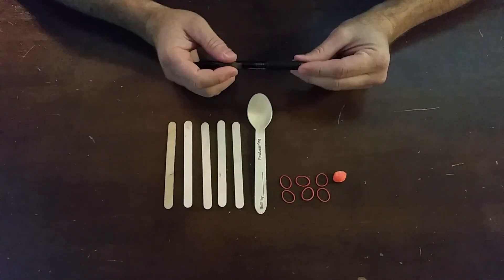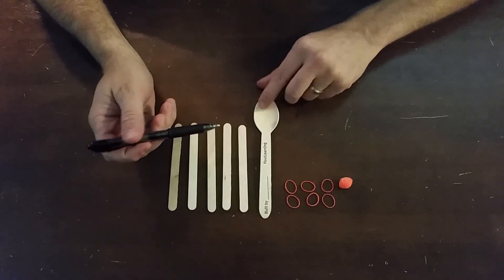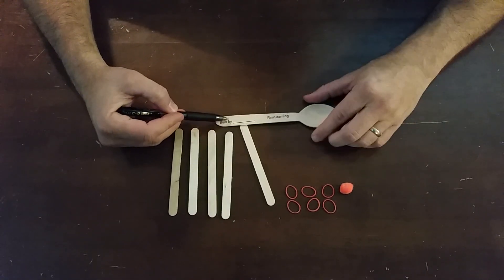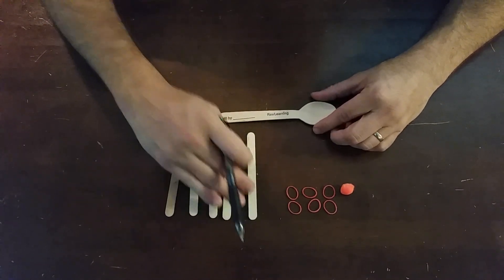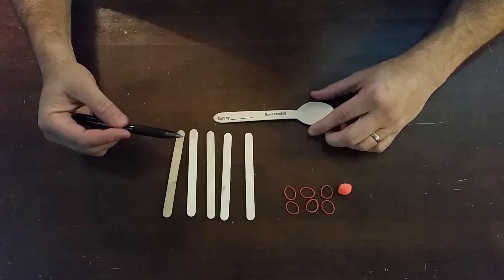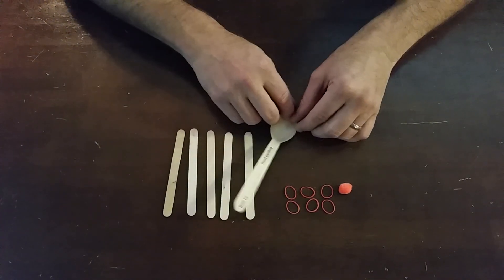The other thing you want to get is maybe a pencil or a pen, and go ahead and put your name here where it says "built by" on the catapult, so that you can keep it straight between you and your brothers and sisters in the house and know whose catapult is whose.